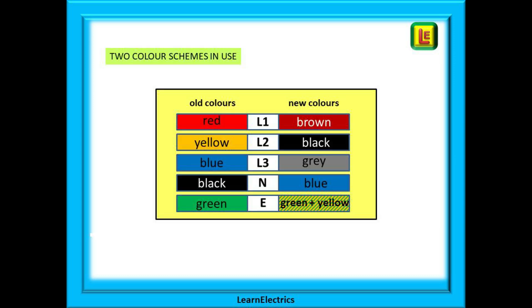In part one we said that there are two color schemes in use for cables and that the old red, yellow and blue colors have been replaced with brown, black and grey for new installations. You will come across both color codes in your work and you must become familiar with recognizing both styles for your own safety. In this video we will deliberately use both color codes at different times.